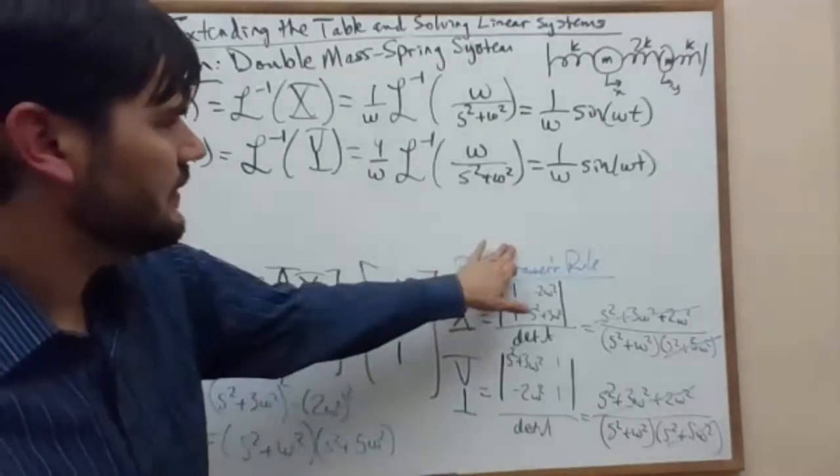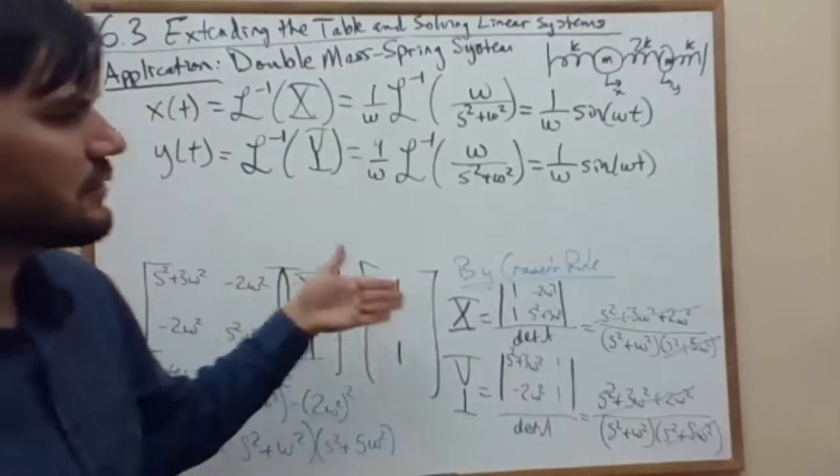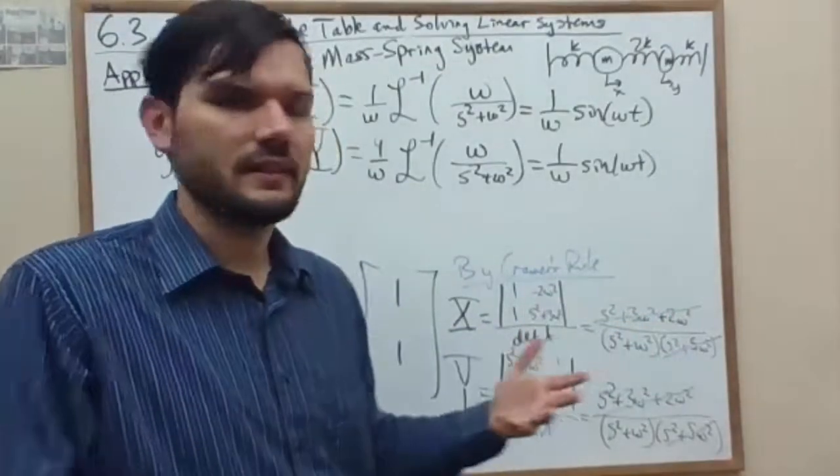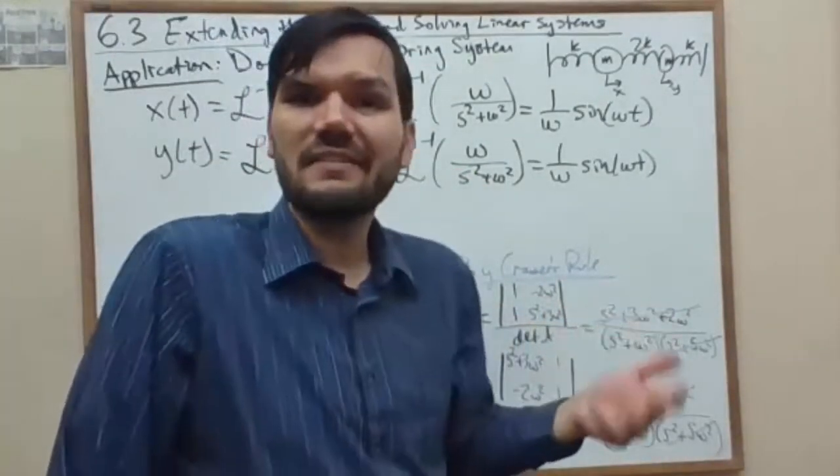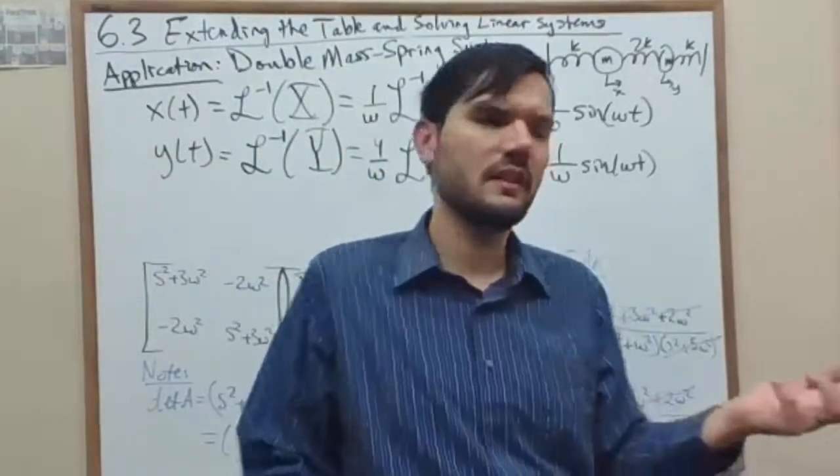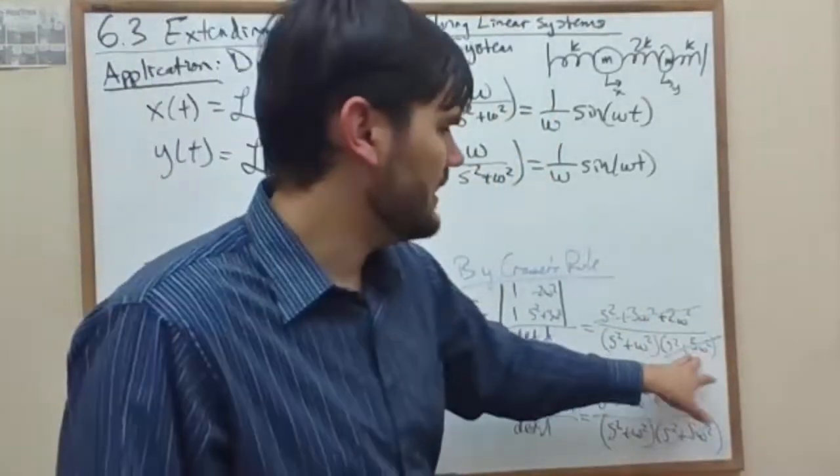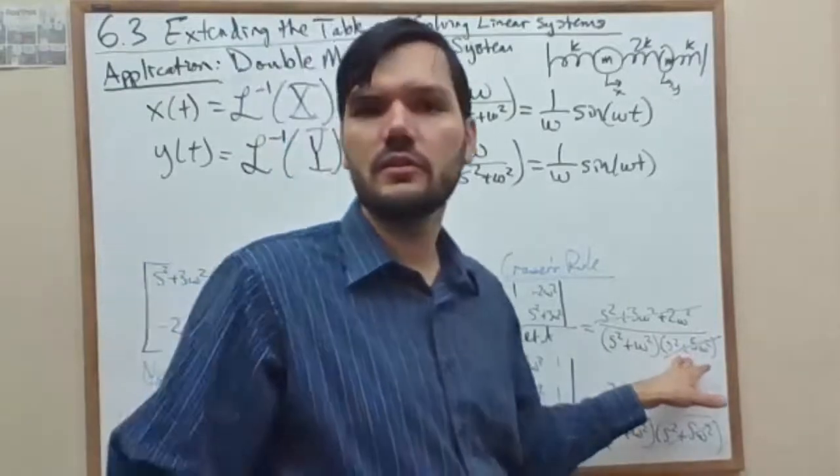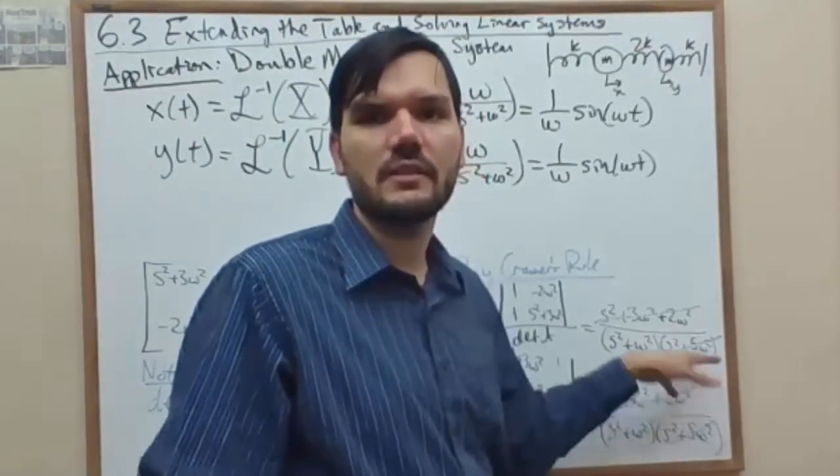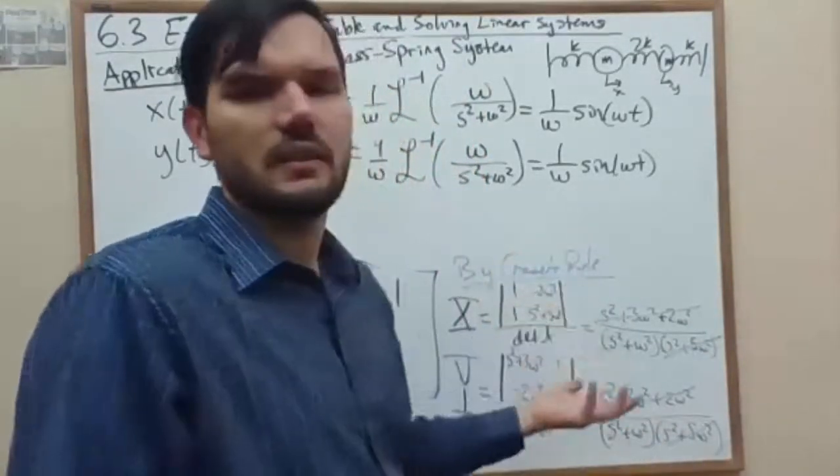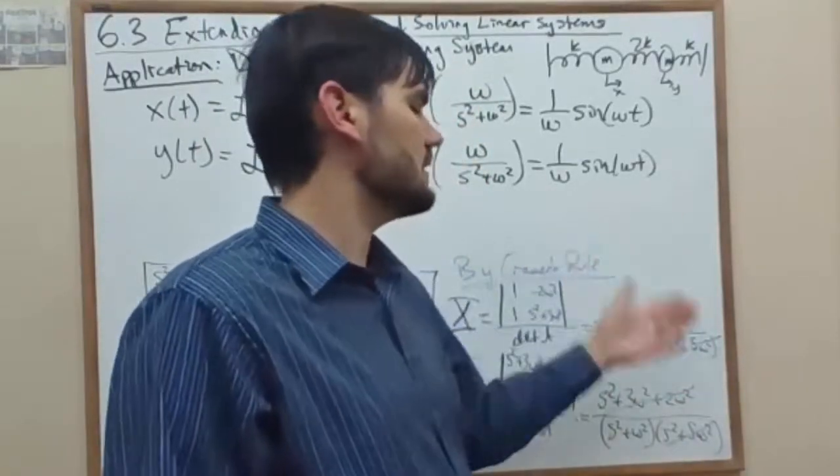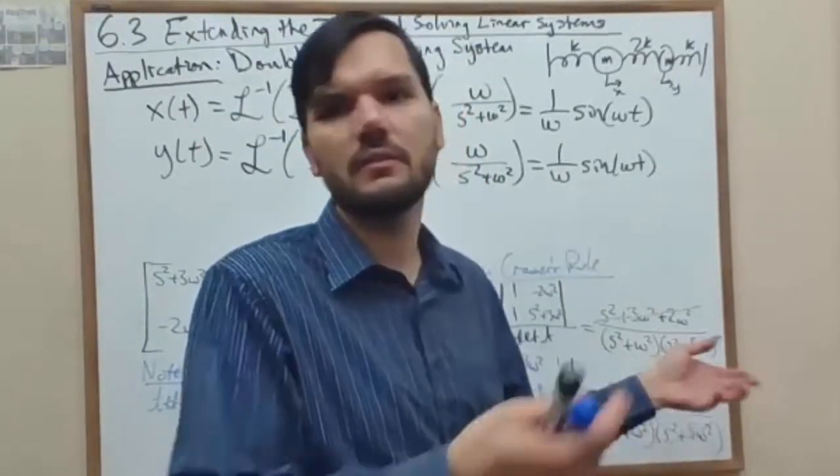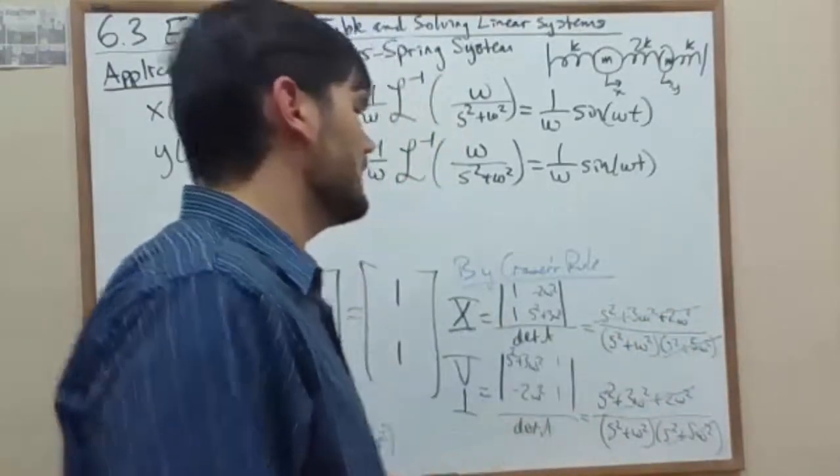And then, once we had the transformed versions from that linear system, we simply invert using our table. And if necessary, we could have broken it apart. If we were unable to cancel those out, we would have used partial fraction decomposition, broke it up into pieces, and found out how much of the first frequency, sines and cosines, how much of the second frequency, the sines and cosines. That's fine.